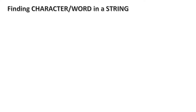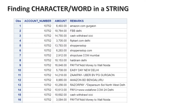Today we're going to look at part six. We're going to learn how to find a specific character or word in a stream. Let's talk about a real-life example: suppose you have your bank statement, where you have the account number, transaction amount, and the remarks which say where you have done the transactions.